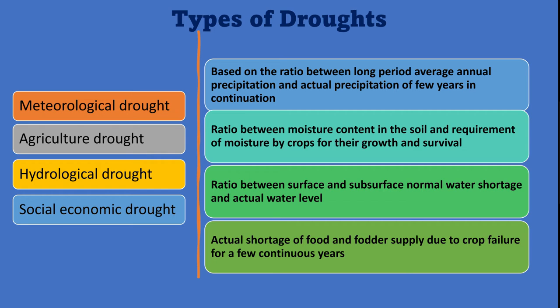Hydrological drought occurs when water levels in surface reservoirs - rivers, lakes, and ponds - and subsurface aquifers fall much below the statistical average or normal levels. The last type is socio-economic drought, which occurs when the supply of essential goods and services - including water, food, fodder, and hydroelectric power - falls short of minimum demand.